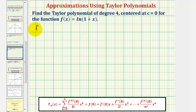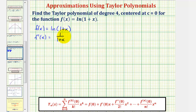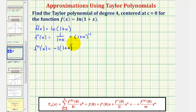We begin with f of x equals natural log of the quantity one plus x. The first derivative is equal to one over the quantity one plus x. Applying the chain rule, the derivative of one plus x is just one. Let's write this as the quantity one plus x raised to the power of negative one to help find the next derivative. The second derivative equals negative one times the quantity one plus x to the negative two. The third derivative equals positive two times the quantity one plus x to the negative three.